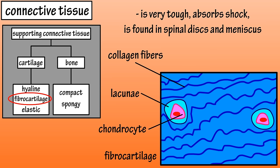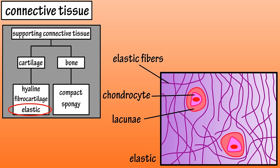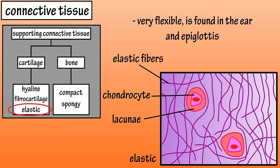The third type of cartilage is elastic cartilage. Elastic cartilage contains some collagen fibers and a high number of elastic fibers, and it also has chondrocyte cells and lacunae. This cartilage has a high degree of flexibility and can be found in the external ear and in the epiglottis, which prevents swallowed food from entering the trachea.